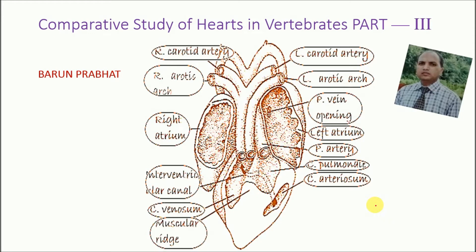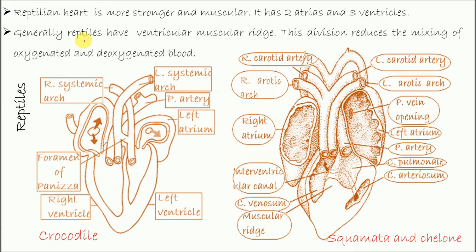Hi, I am Bairun Pravath and I am going to discuss comparative study of hearts in vertebrates. Here I'll discuss reptilian heart. Reptilian heart is more stronger and muscular. It has two atrials and three ventricles.